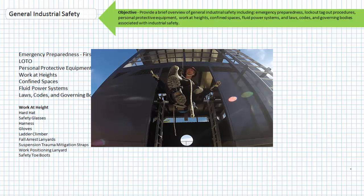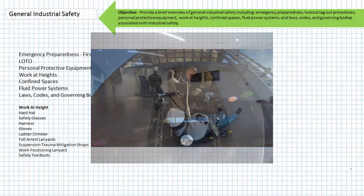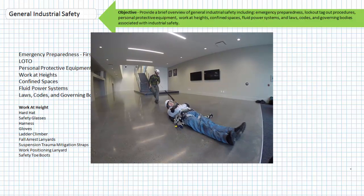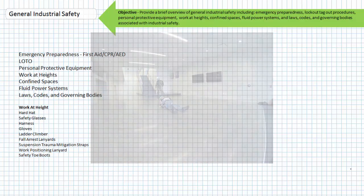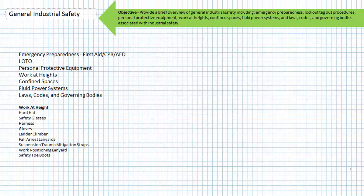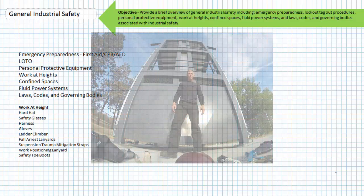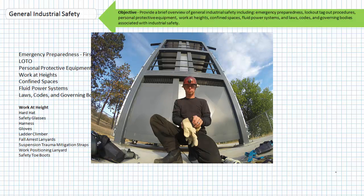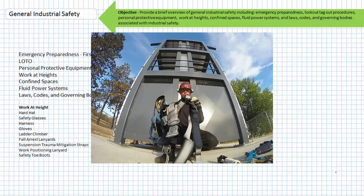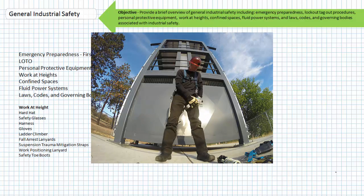The work positioning lanyard can be creatively employed as a backup set of suspension trauma mitigation straps. It can act as a tether, a rope deviation, or aid in the lateral transfer of a casualty. The utility of this device in work at height scenarios is only limited by your imagination. Here's time-lapse footage of an unusually handsome individual donning appropriate personal protective equipment for work at height scenarios.